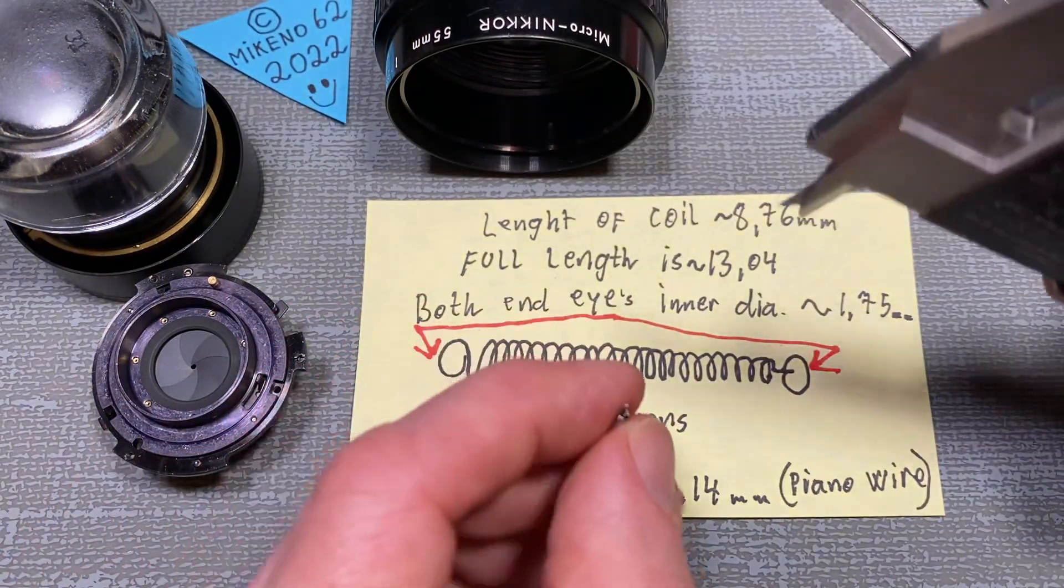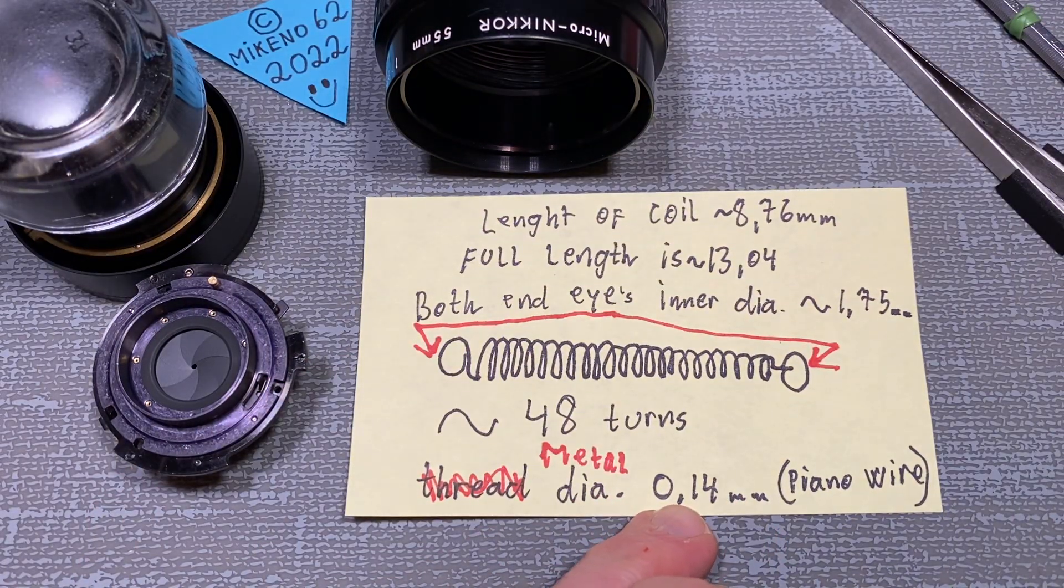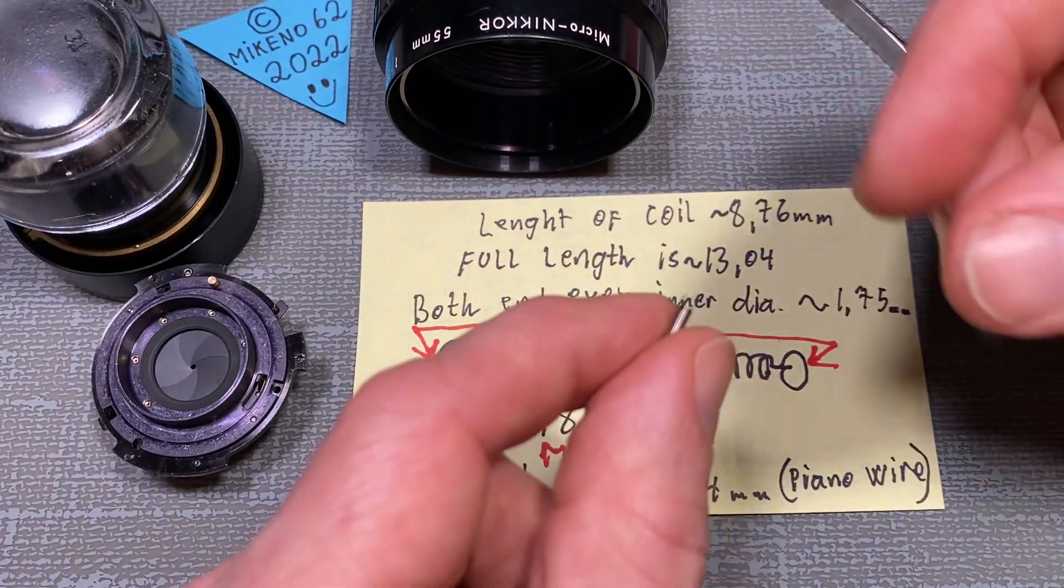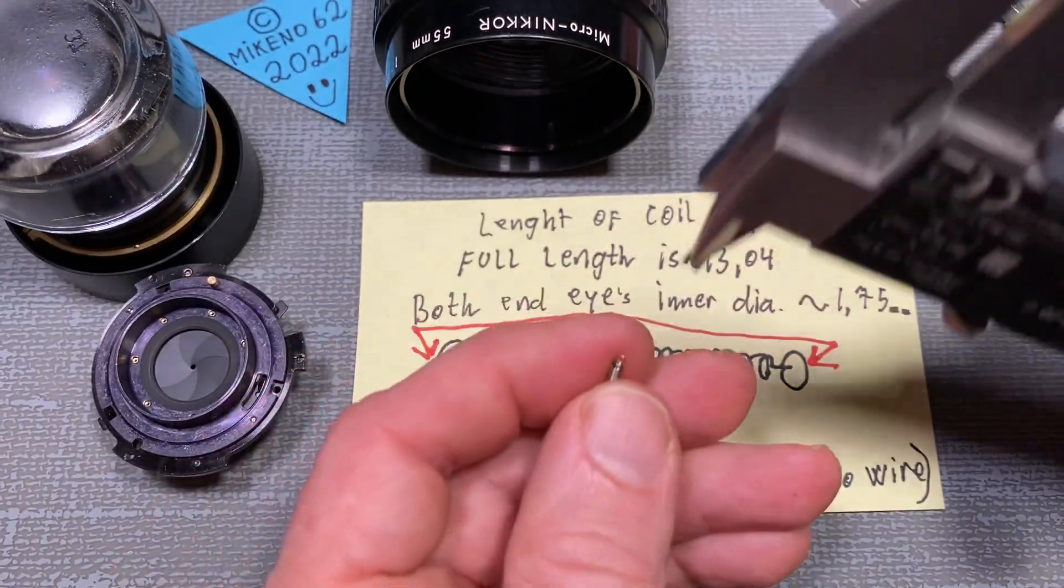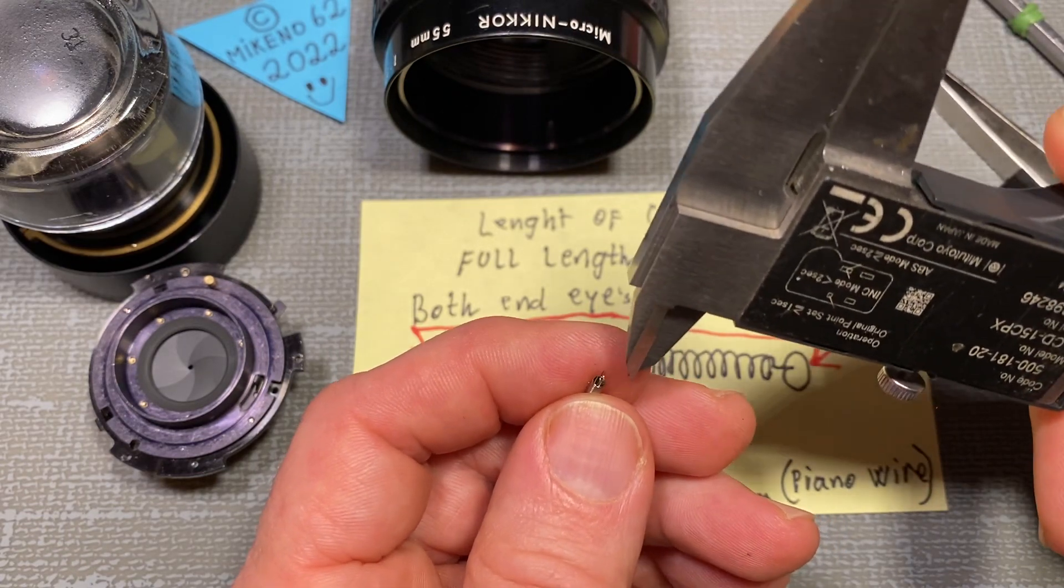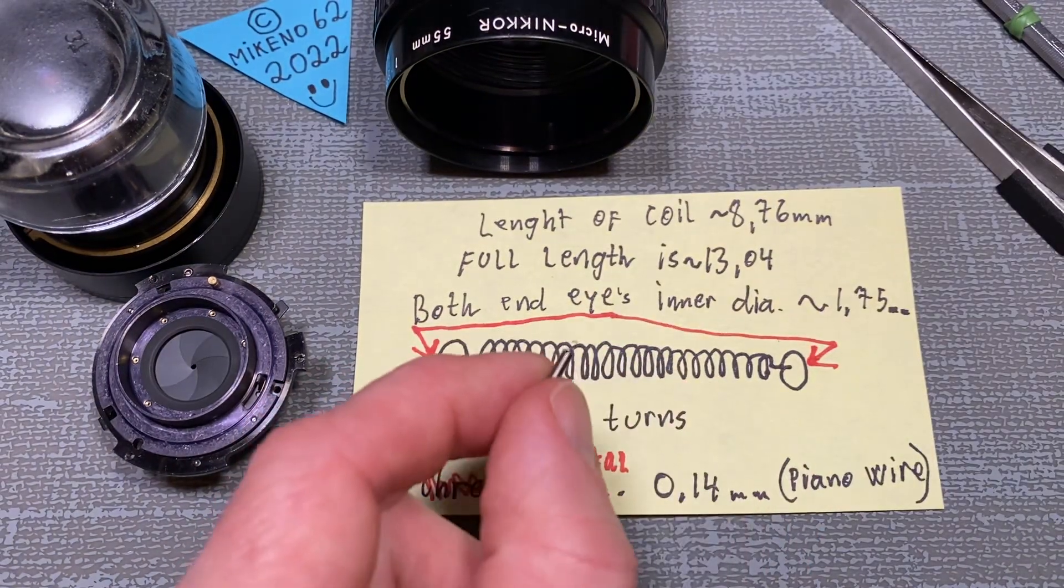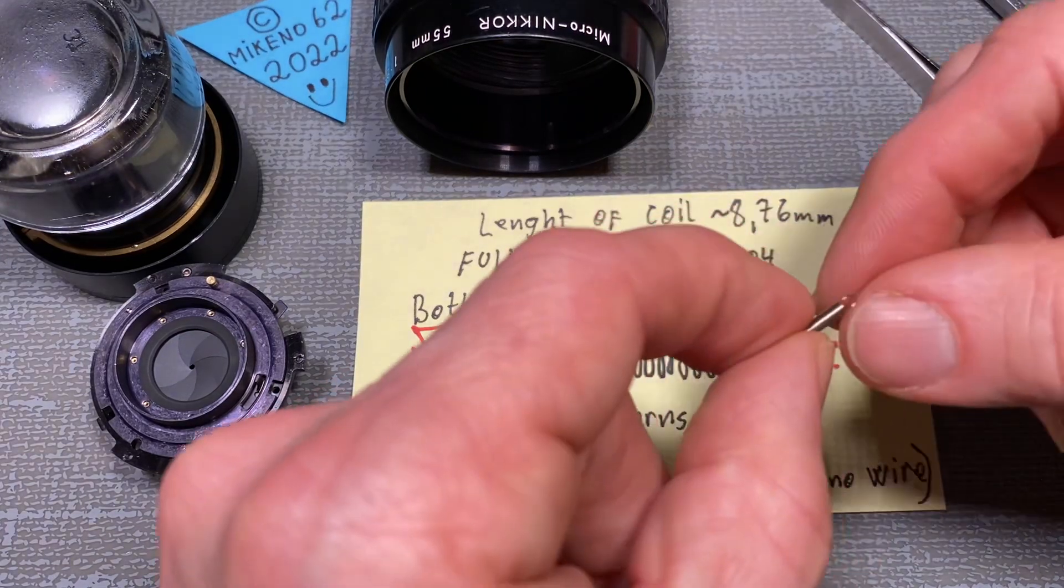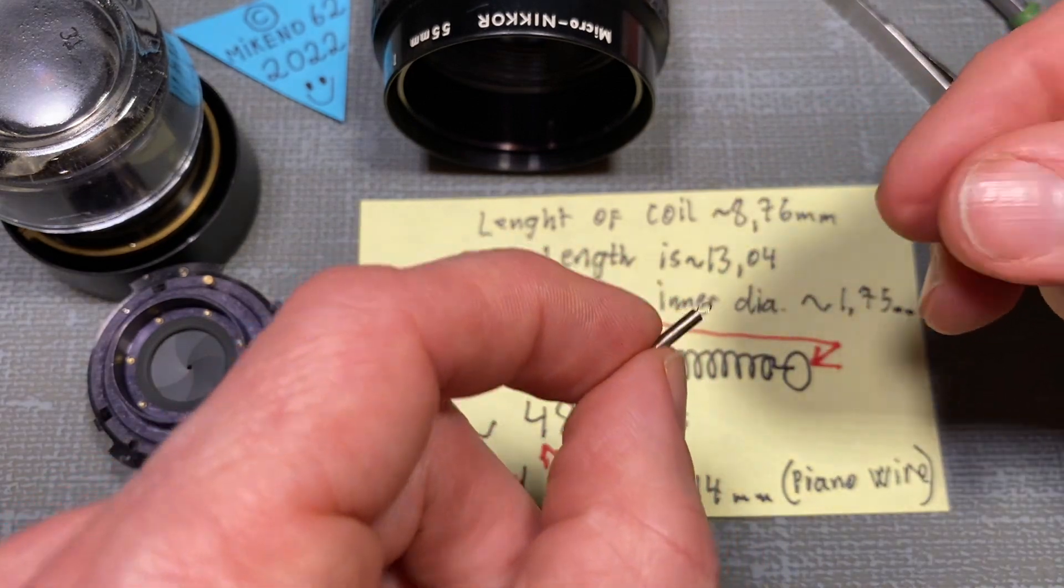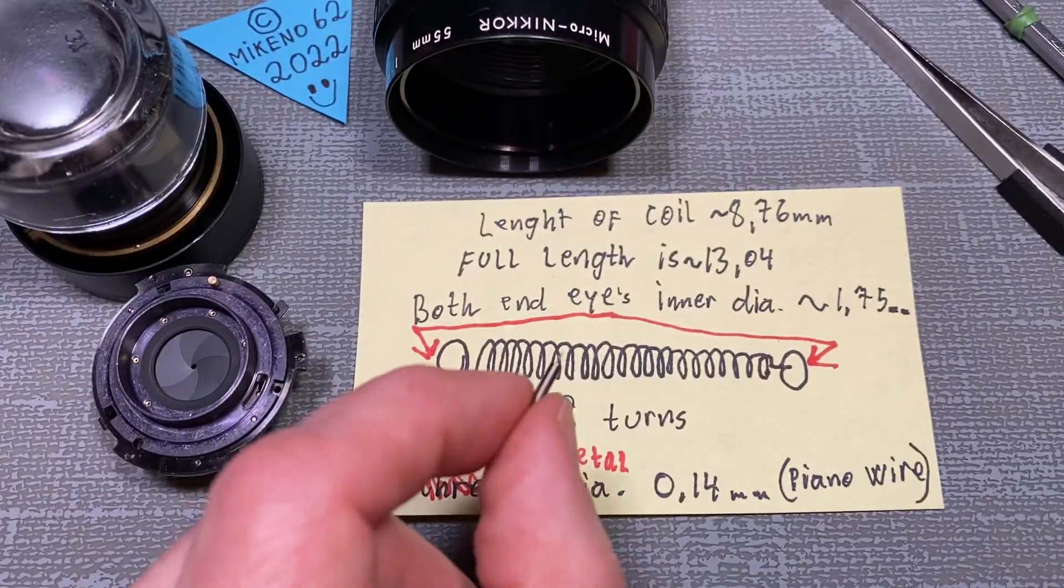The inner diameter, well, you just take 2 times 0.14 from the outer diameter and then the inner. I think it doesn't really matter that much how much tension it could be, one Newton or two Newton, I don't know.